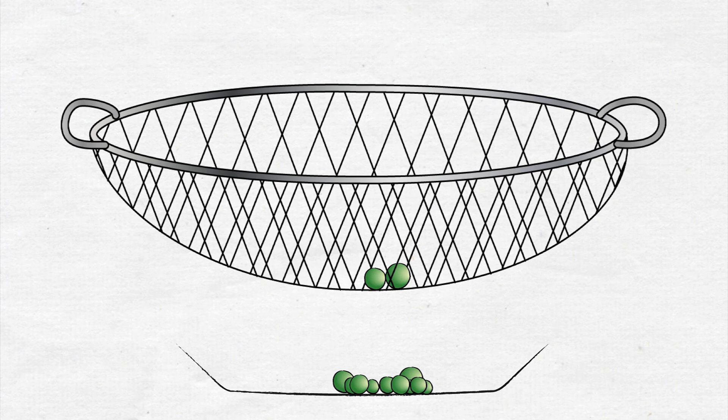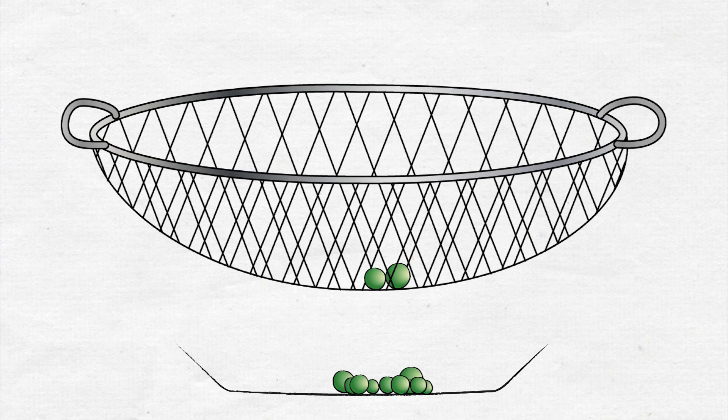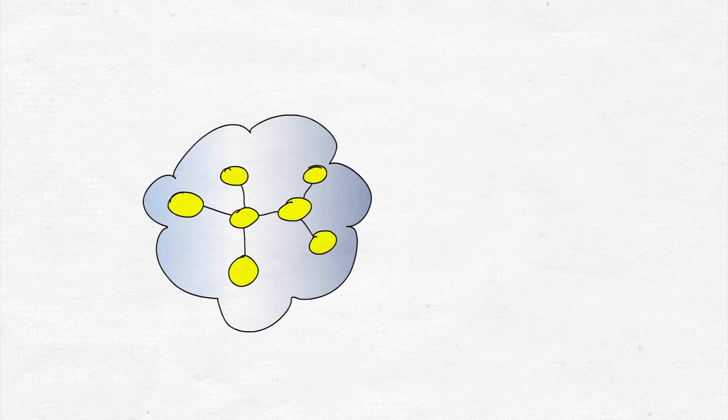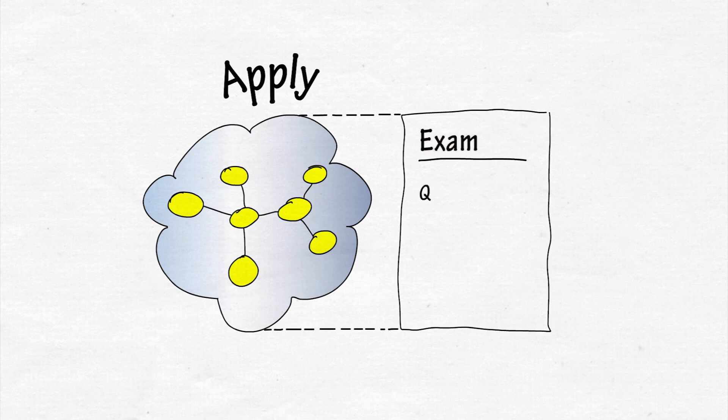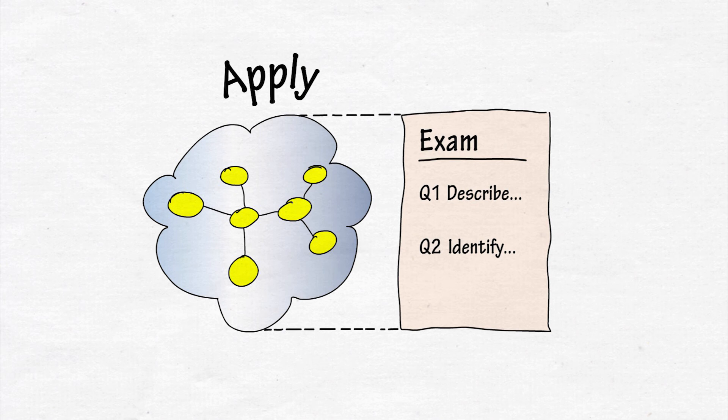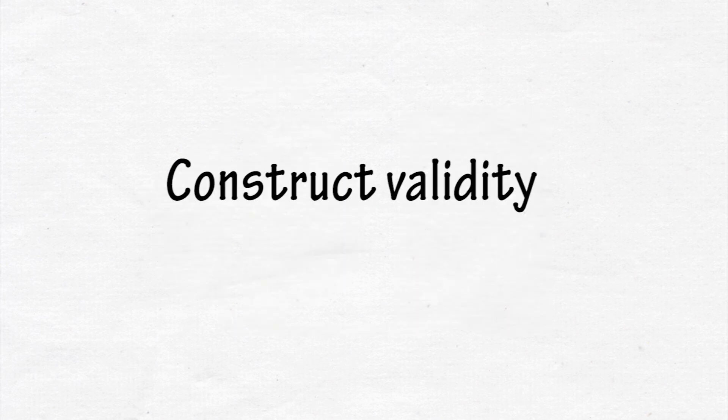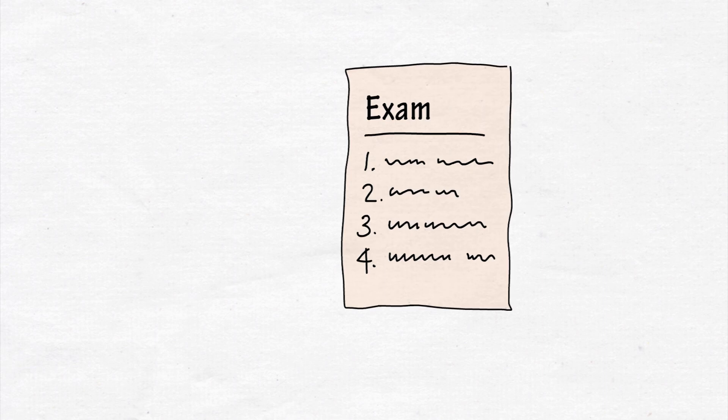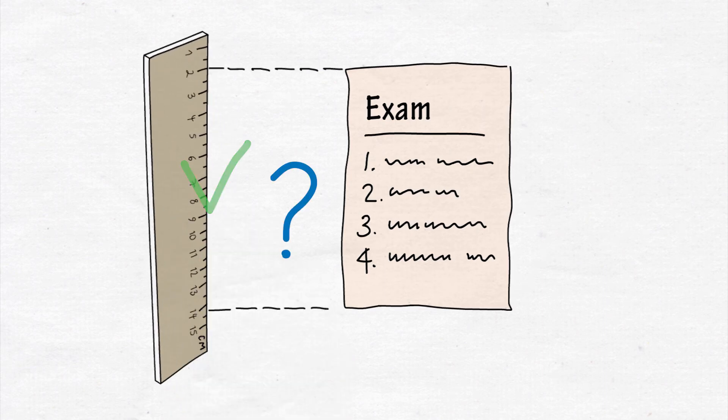The holes that are too wide can be compared to exam questions that do not measure what you want it to measure. For example, your goal is that students are able to apply the concepts taught in the module, but in the exam you ask them only to describe and identify the concepts. This is called construct validity. Do your questions really measure what you want to measure, or do they measure something else?